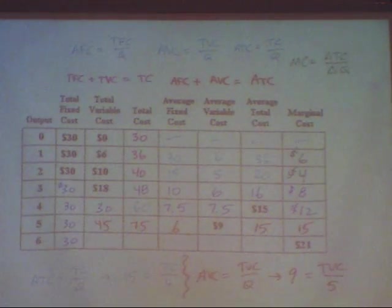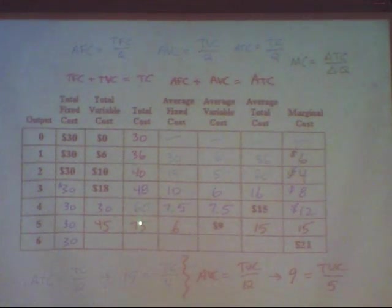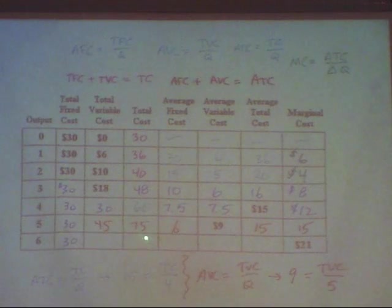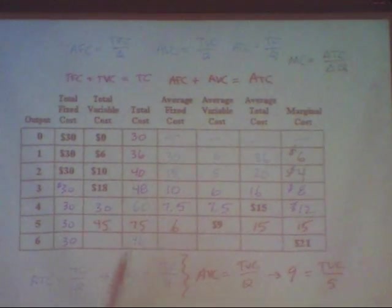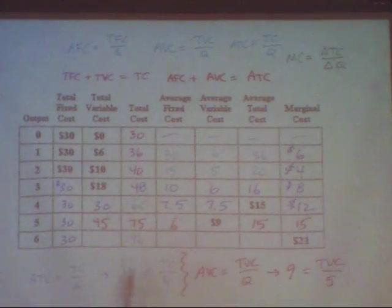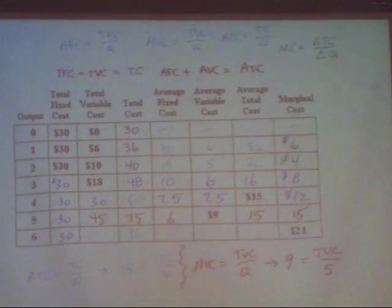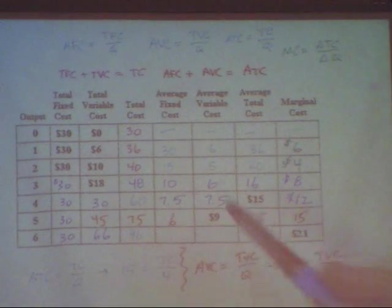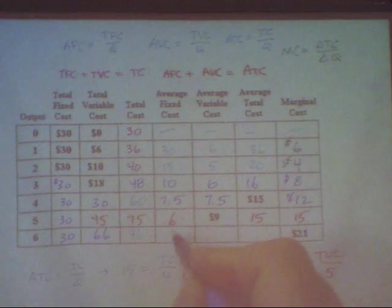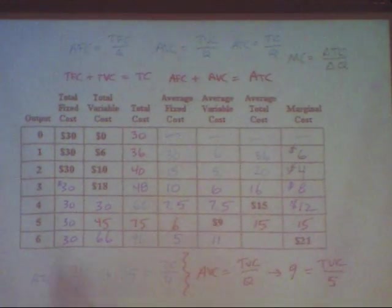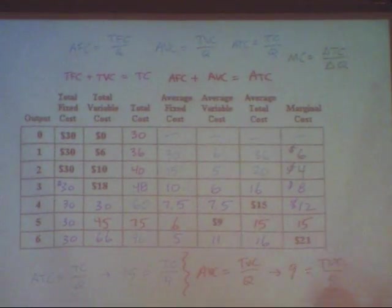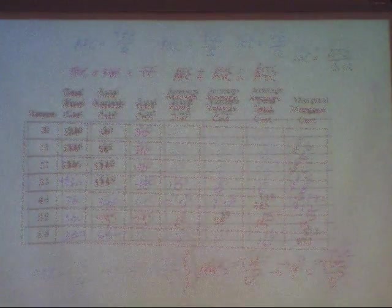Last row: since we know it costs $75 to produce 5, and the marginal cost to produce the 6th is $21 more, the total cost must be 96. Working backwards: 96 equals 30 plus something, so variable cost must be 66. Average fixed is 30 divided by 6 equals 5. Average variable cost is 66 divided by 6, which is 11. Average total cost is 96 divided by 6 equals 16, and 5 plus 11 equals 16. Either way, we get the same thing — those are the right numbers that go into the cost table.